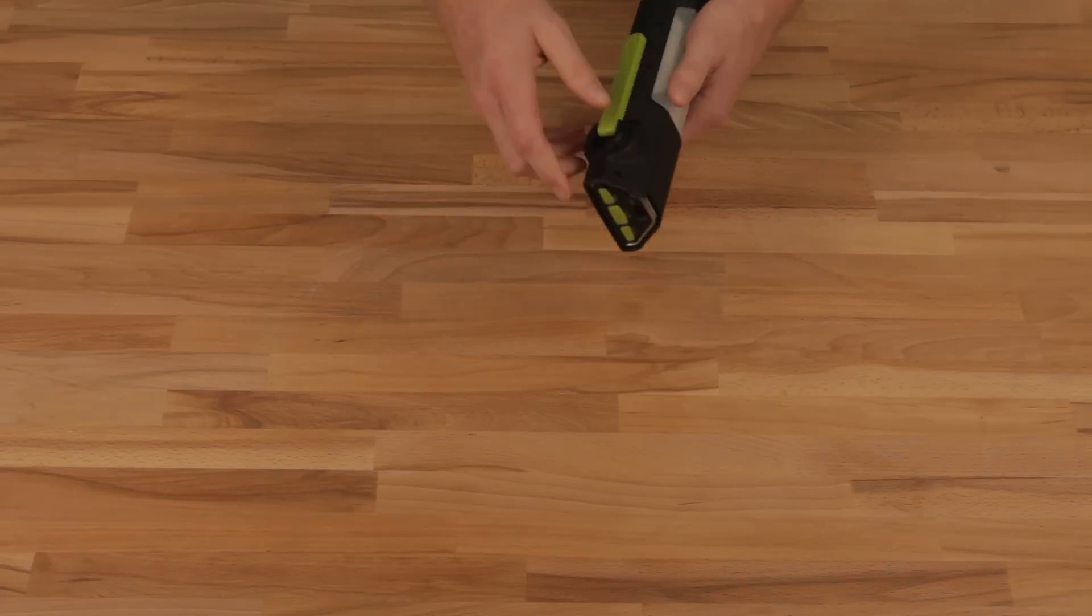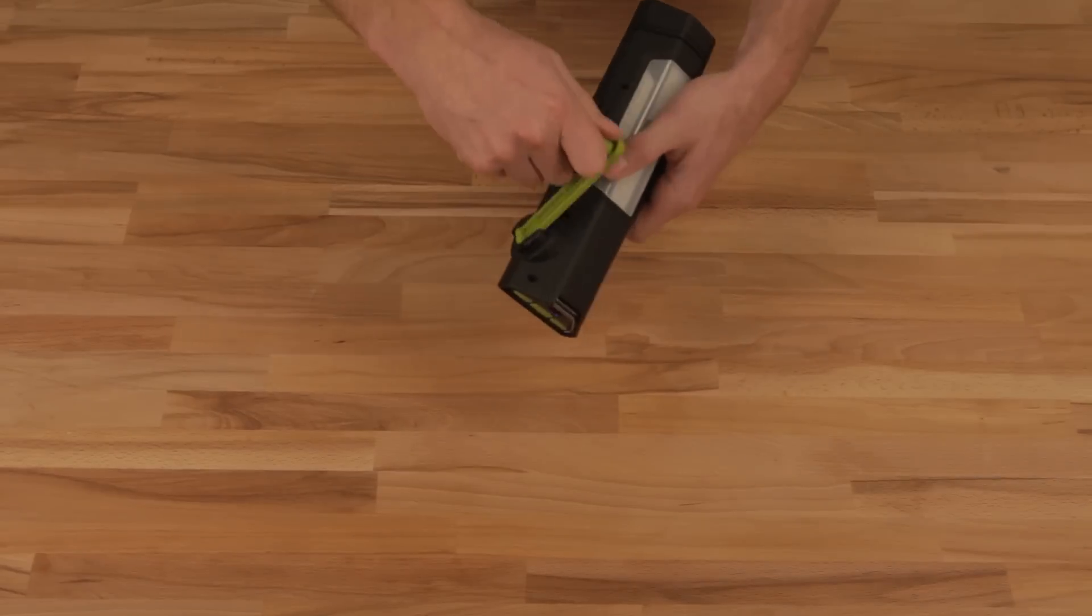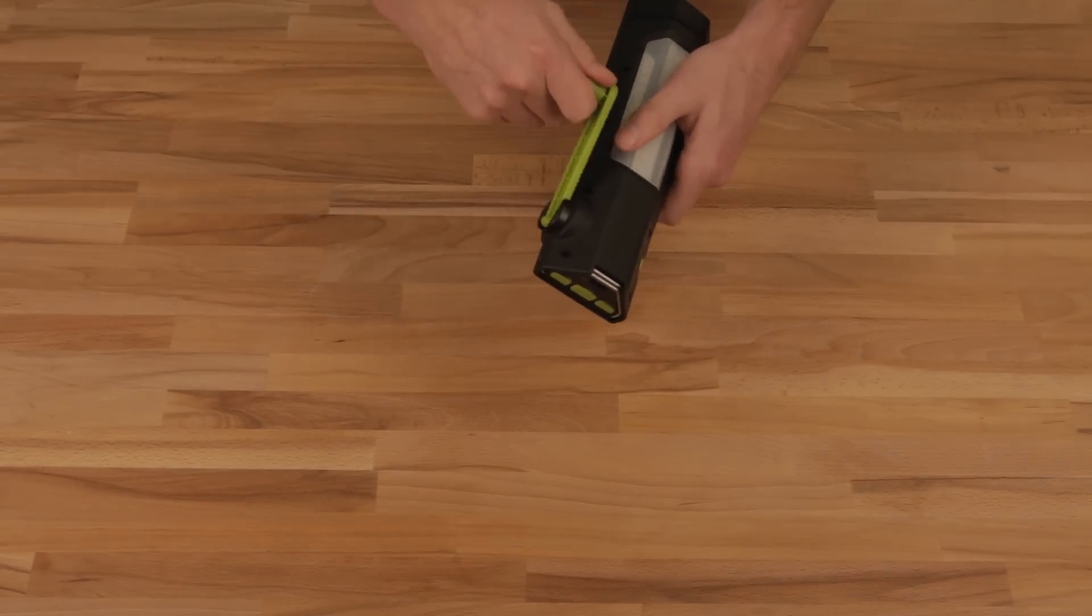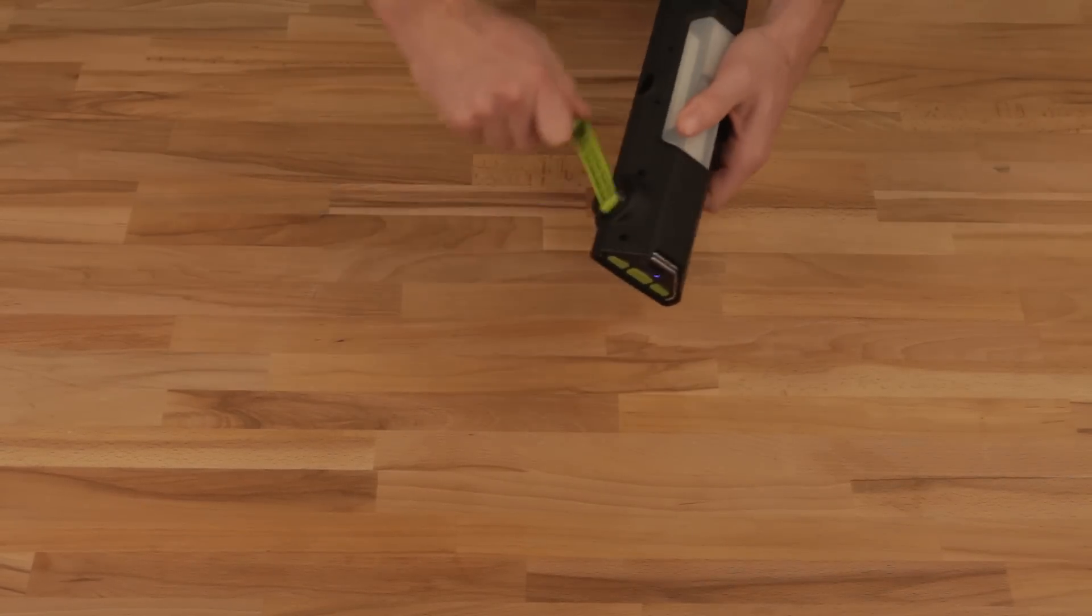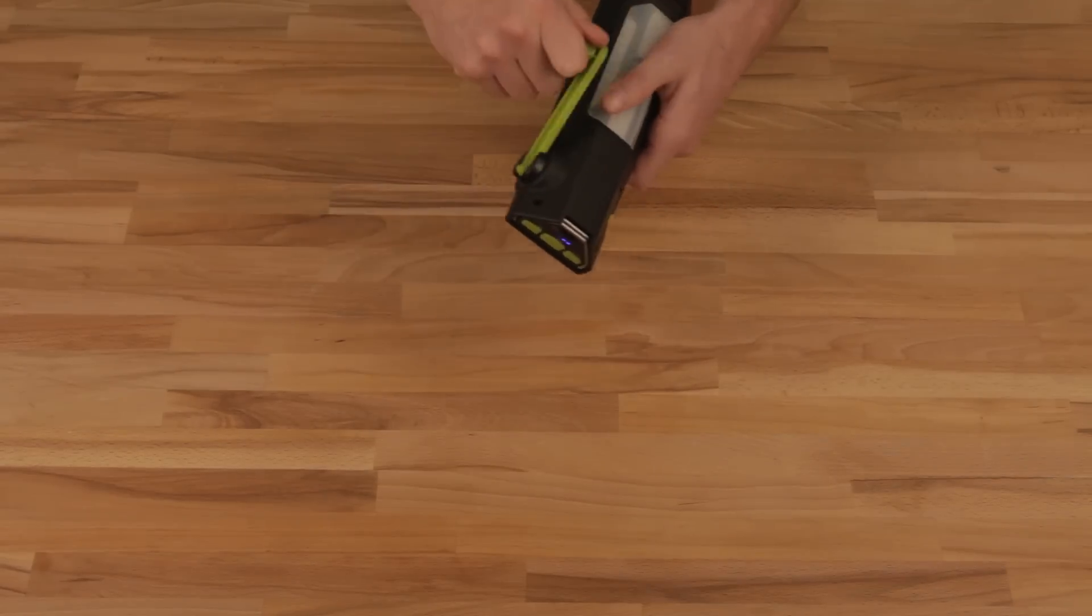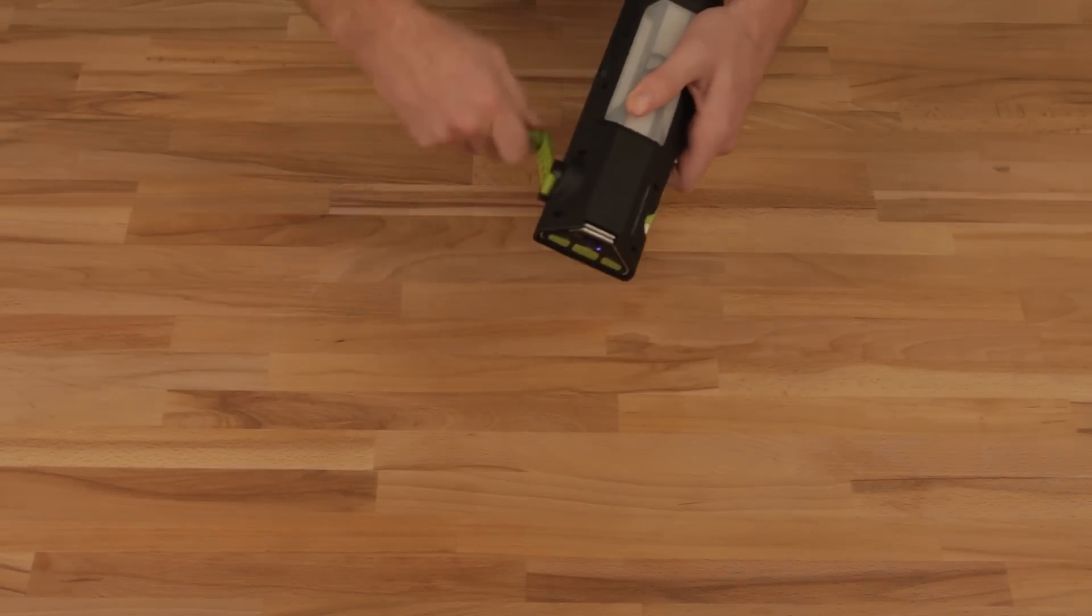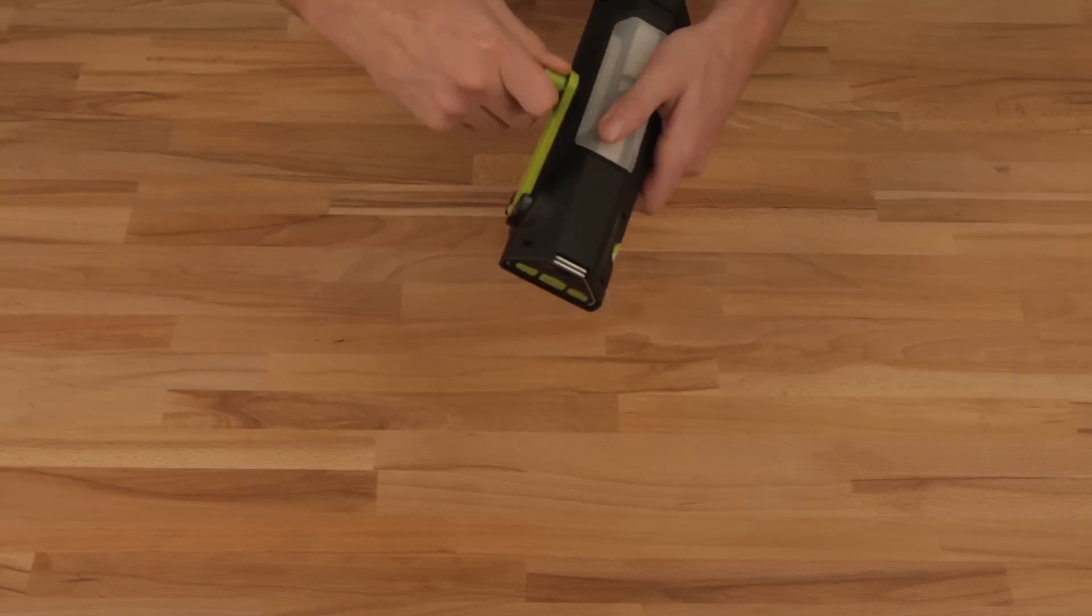Last but not least is the hand crank for, say, the zombie apocalypse, a nuclear winter, any volcano erupts by your house. Just pop the handle out and crank it for one minute and you'll get about two minutes of floodlight on low.